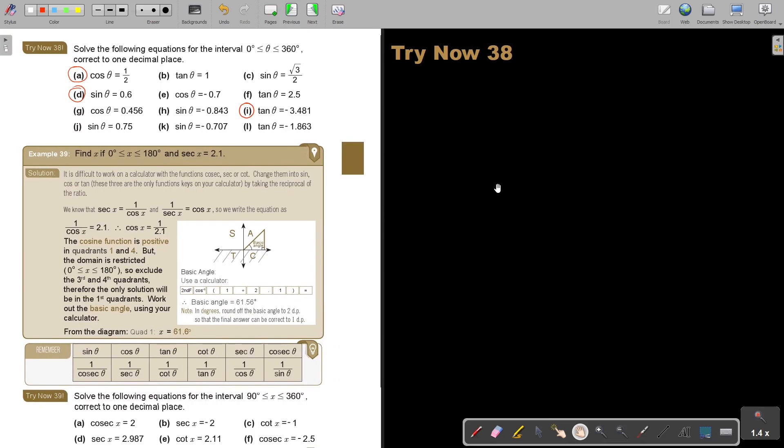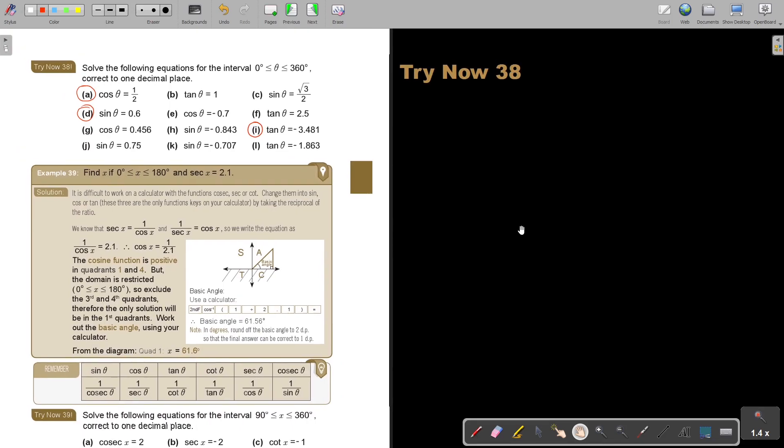Let's start with number A. cos θ = 0.5. Always, always start by making your CAST diagram, especially in the beginning when you're not familiar with all the things. And don't forget your CAST. Say to yourself, where is cos positive?